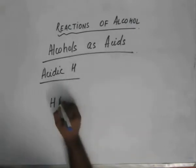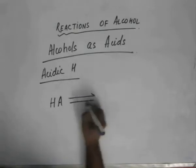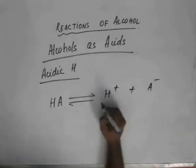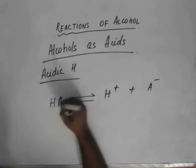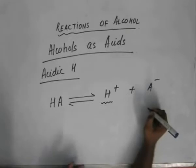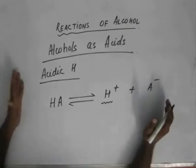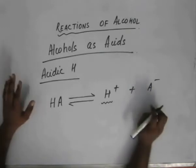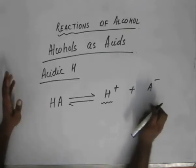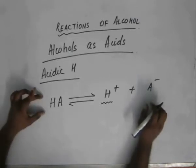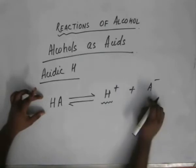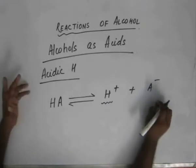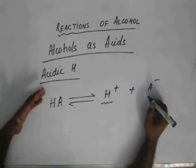If we have HA as an acid and it generates H⁺ ions, then we say that this H was acidic. Every reaction in organic chemistry is governed by stability. If this acid dissociates into H⁺ and A⁻ ions, and both are not stable, they won't dissociate. A⁻ will be formed from HA if and only if A⁻ is stable.